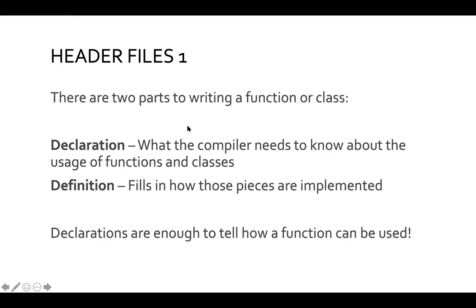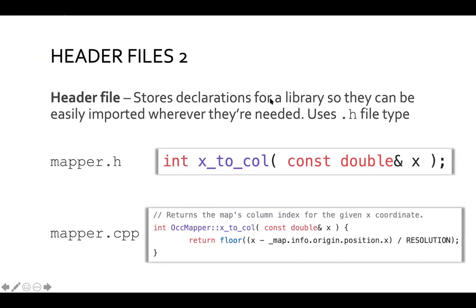In C++, there are two parts to writing a function or class: a declaration and a definition. When we declare a function, this is all the compiler needs to know about how it's used. The definition actually fills in the implementation. Header files store these declarations so they can be imported wherever needed — they end in .h. So a single-line function signature in the header, and then the source file fills out how it's actually implemented.